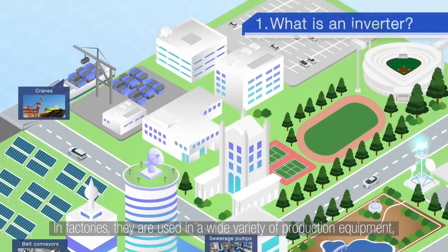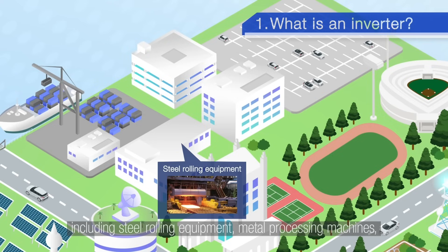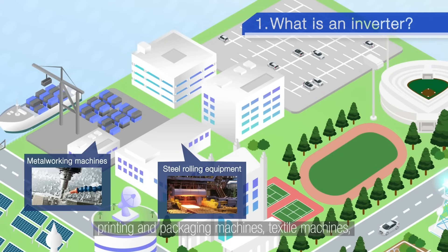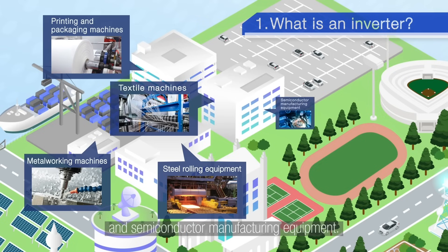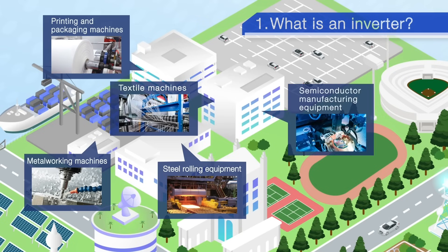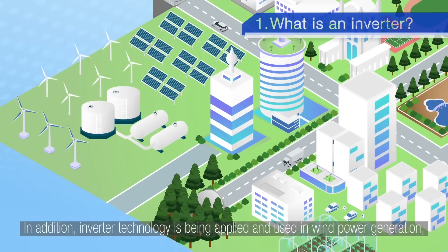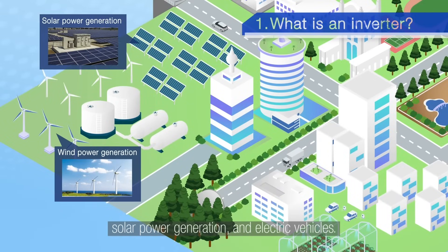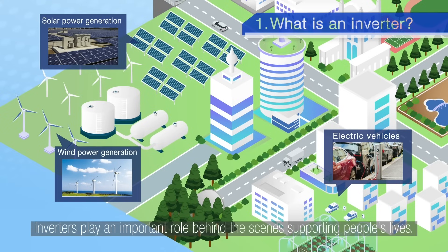In factories they are used in a wide variety of production equipment including steel rolling equipment, metal processing machines, printing and packaging machines, textile machines and semiconductor manufacturing equipment. In addition, inverter technology is being applied in wind power generation, solar power generation and electric vehicles. As you can see, inverters play an important role behind the scenes supporting people's lives.